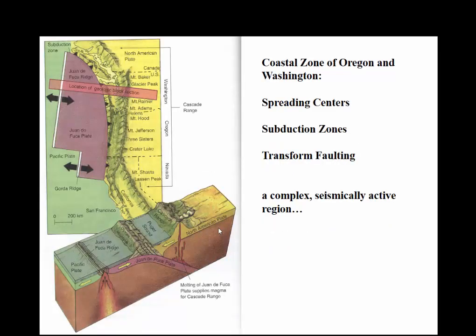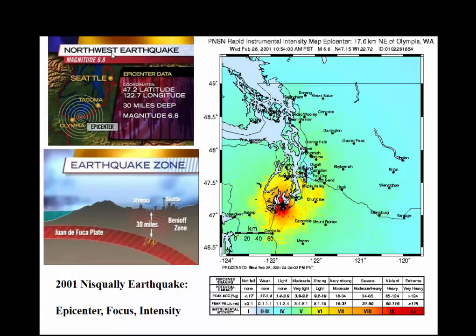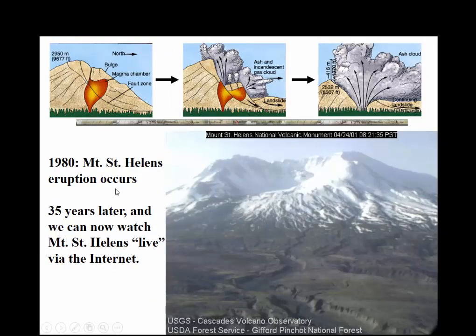You can see some spreading centers, subduction zones, and transform plate boundaries. The Cascade Mountains run from Northern California all the way up through Southern Canada. There was the Nisqually earthquake around 2001 near Olympia, Washington — I was living out in Idaho at the time. And Mount St. Helens — I'm old enough to remember the eruption. There used to be an actual mountain there and the upper 1,500 feet was pretty much blown off. This is what it looks like now.